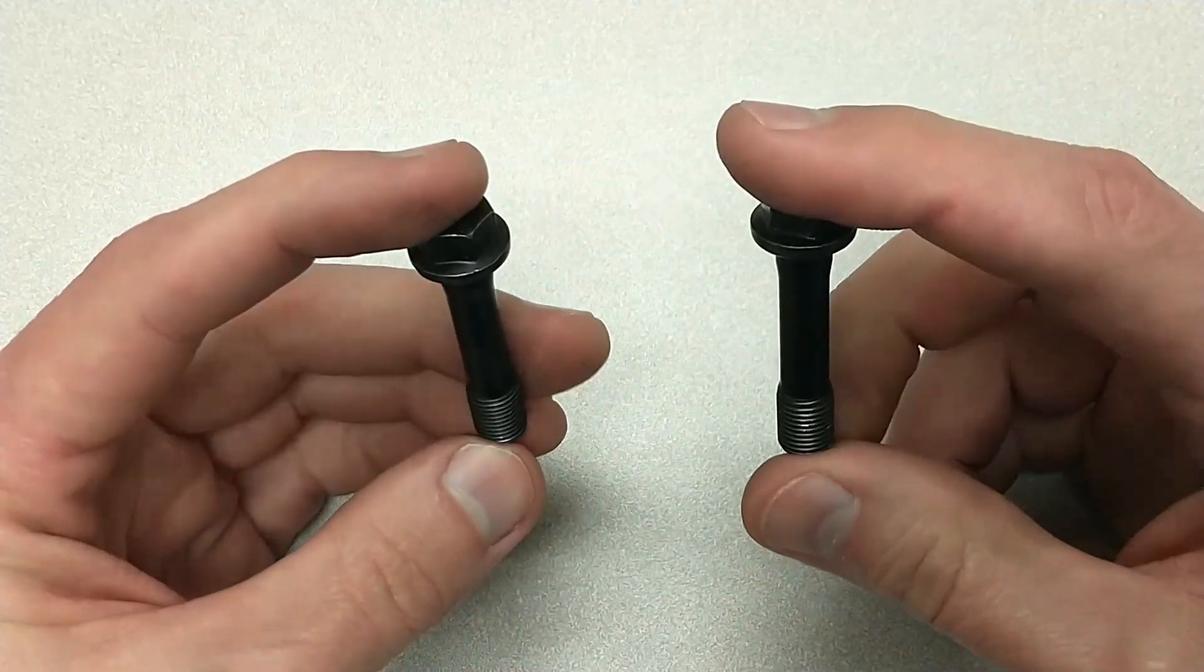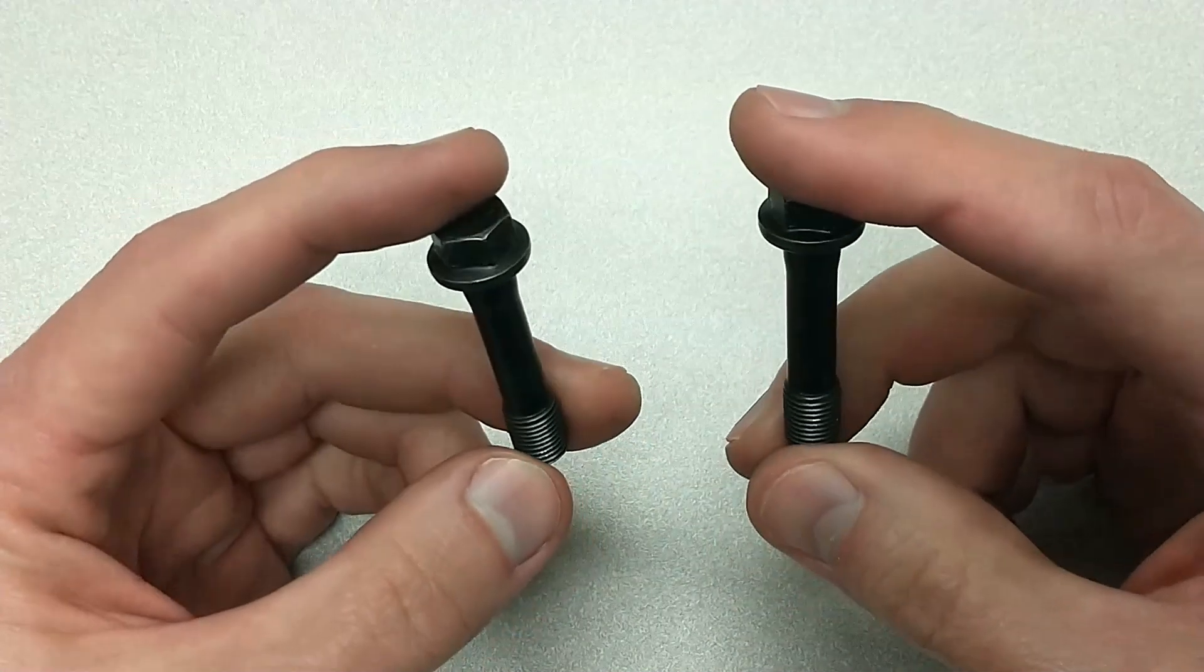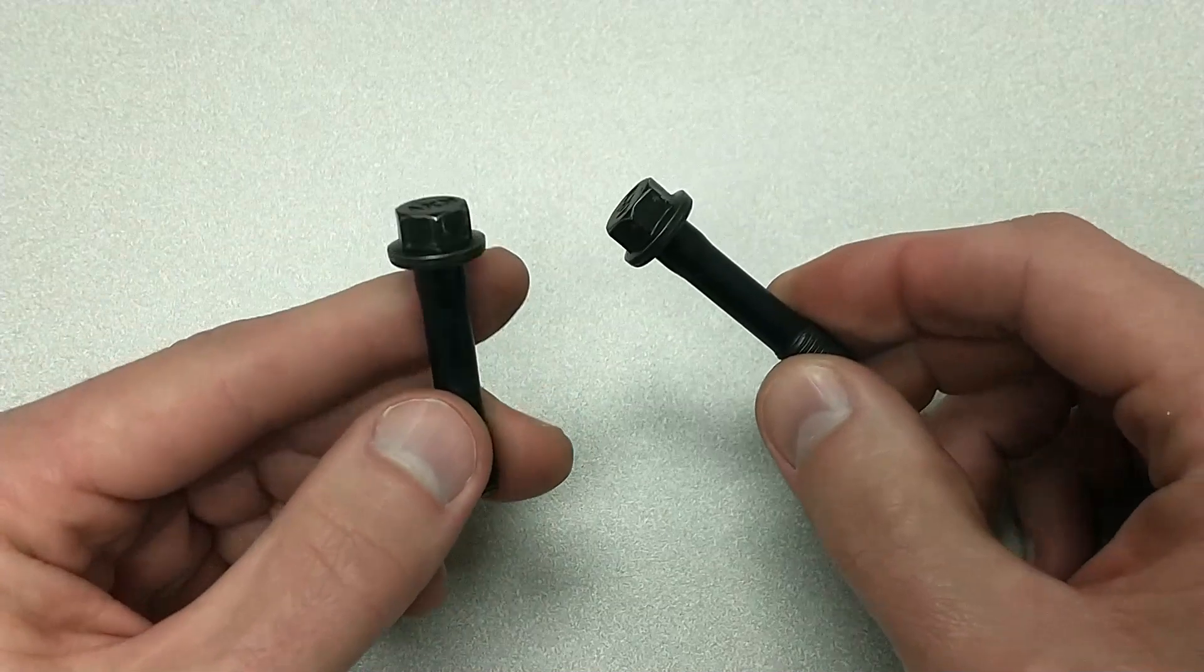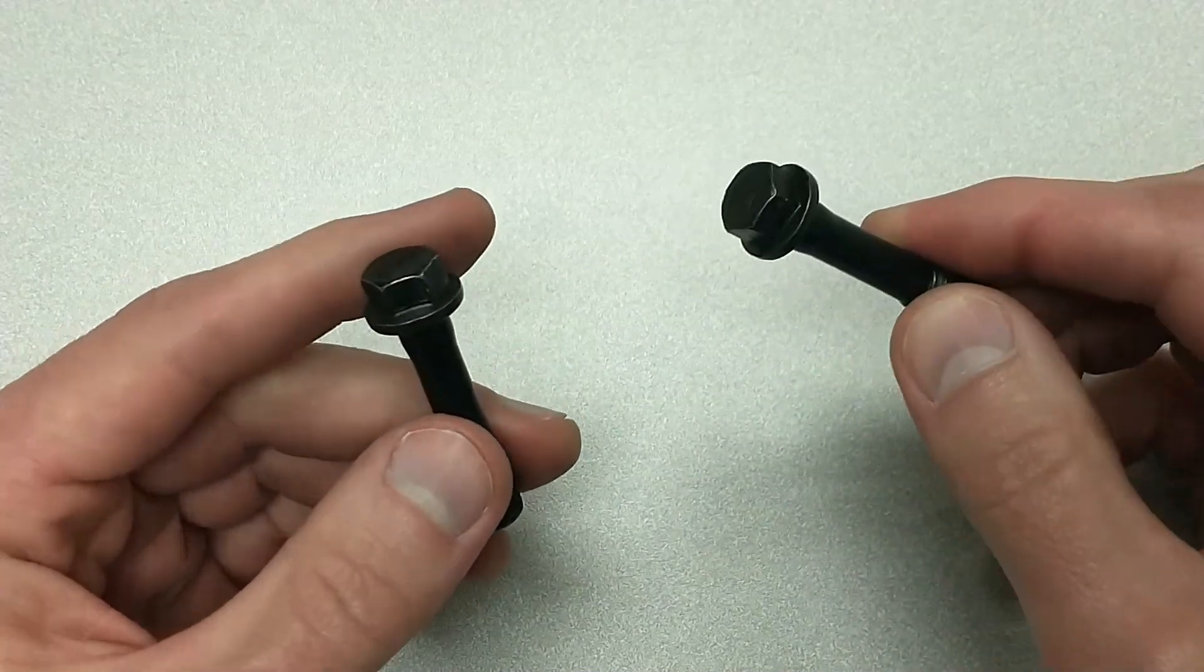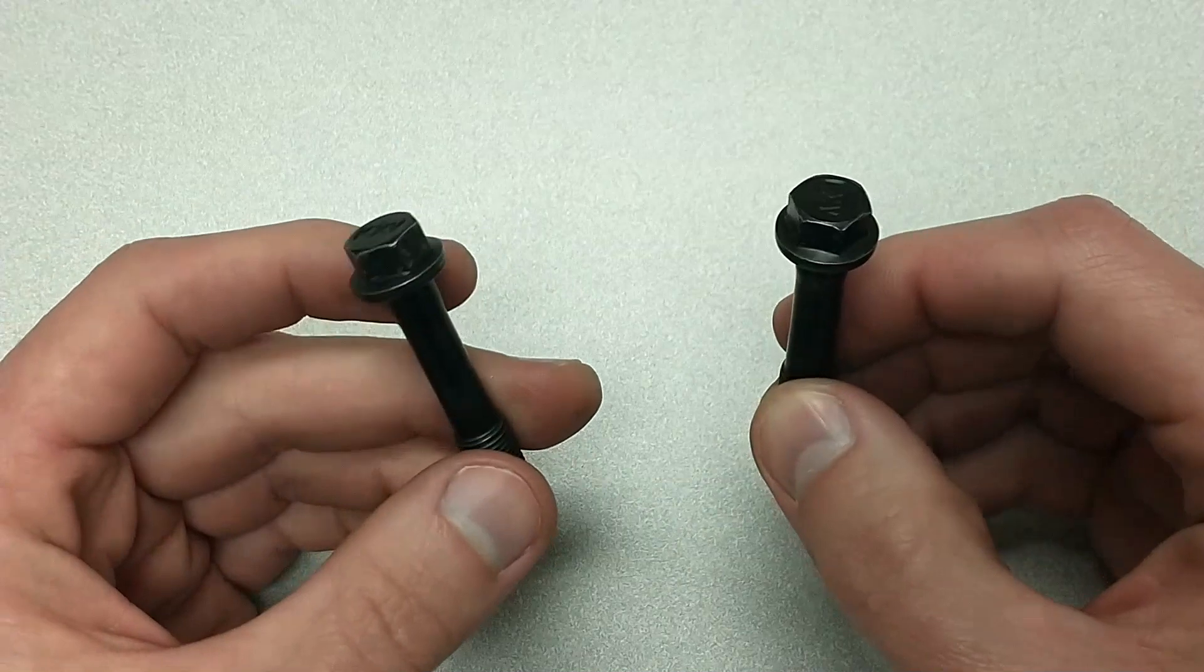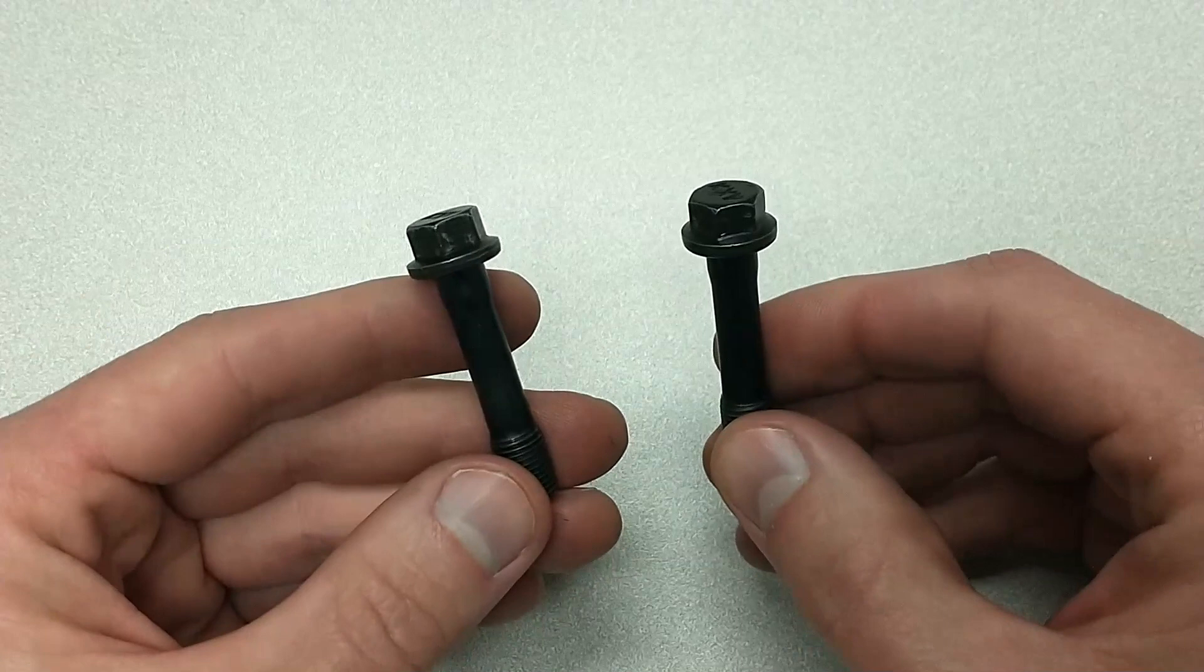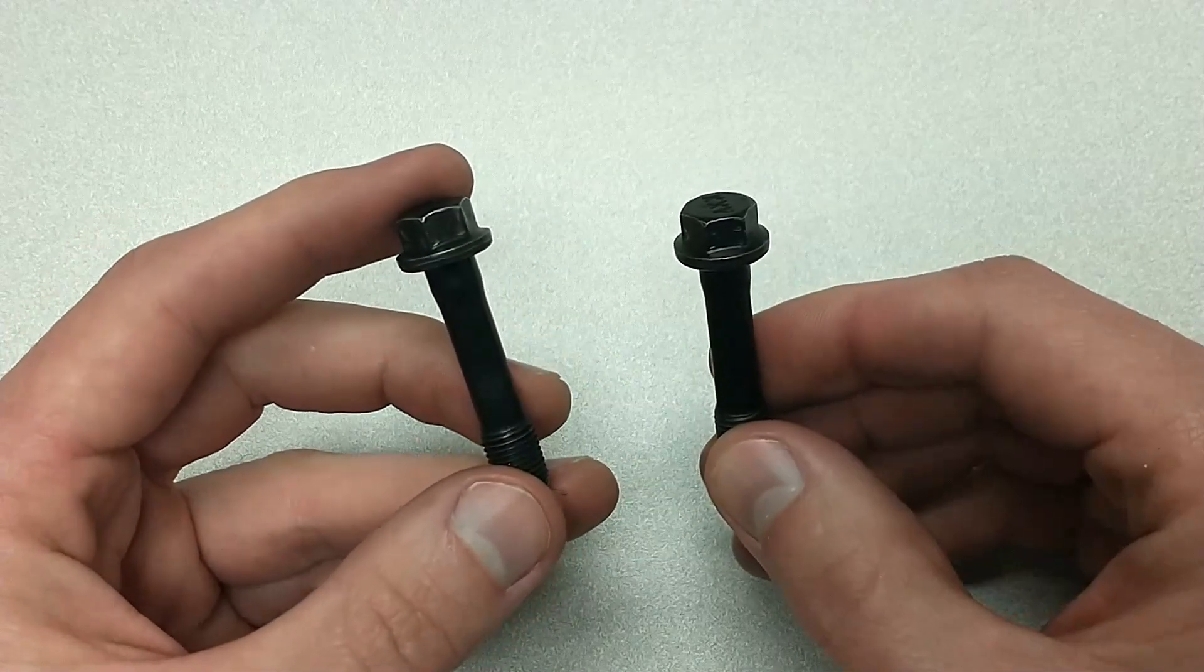This just goes to show that a visual inspection isn't enough when it comes to determining if a bolt should be reused or not. Now on an engine, for example, we have cylinder head bolts, connecting rod bolts, and main bearing cap bolts. Those are our important bolts. I'm not saying that other bolts aren't important or that the torque specifications aren't important on them, but particularly when we're dealing with connecting rods and cylinder heads, the clamping force on those bolts needs to be precise if we want to ensure the longevity of our engine.